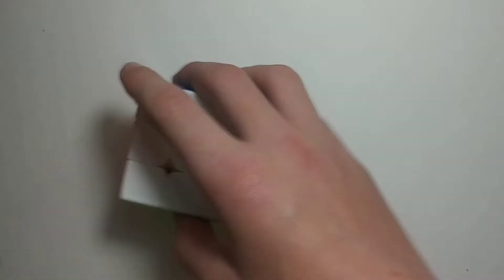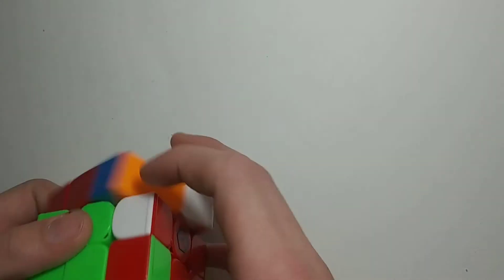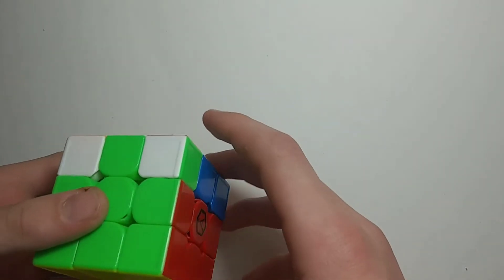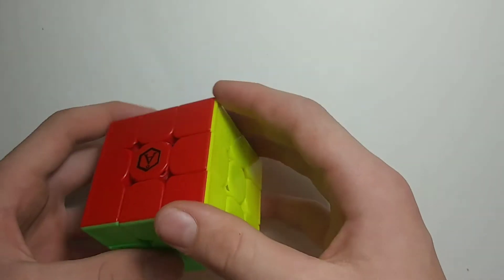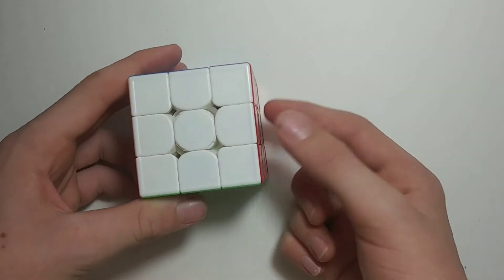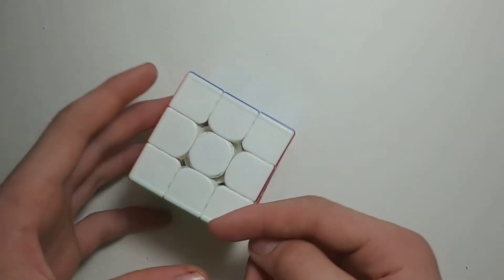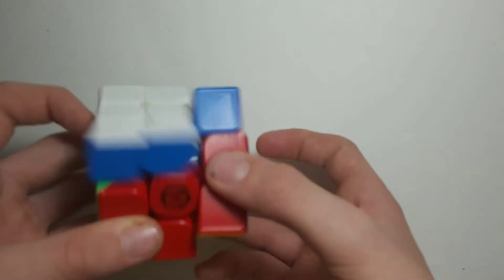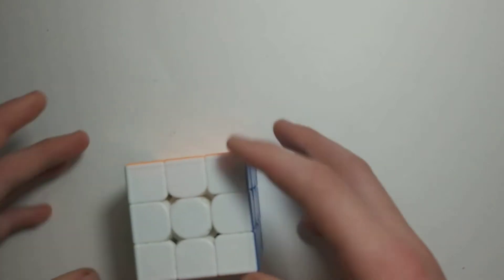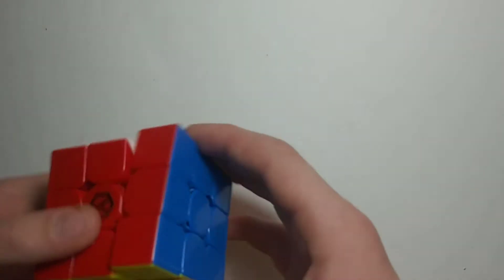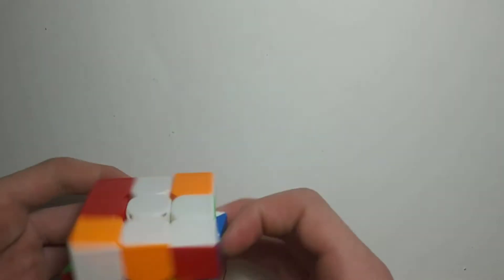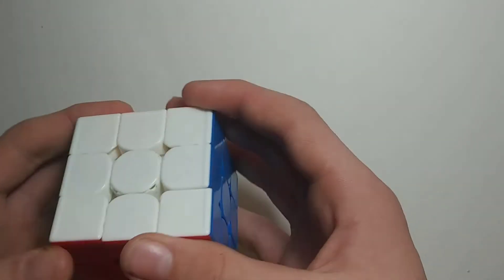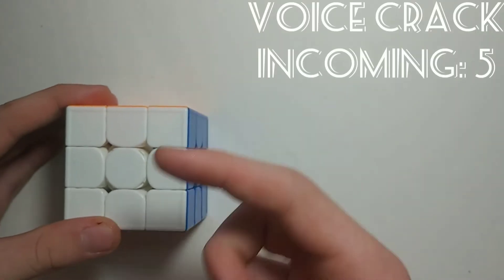My next event I'm competing in is 3x3. My main for this competition is an Angstrom Waylong GTS 3M. I'll have a review coming out on this soon. I personally love this cube - it has amazing corner cutting, basically cuts everywhere. I've tried GAN cubes but I prefer this one, and it fits my turning style perfectly. My goal for 3x3 is a sub-18 average and sub-15 single.